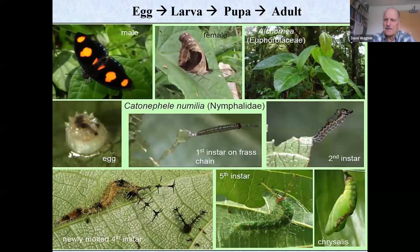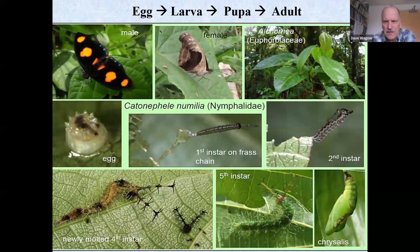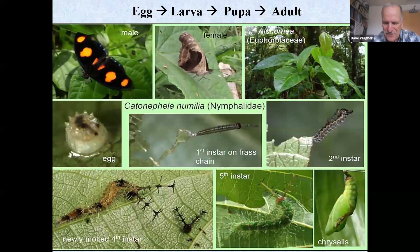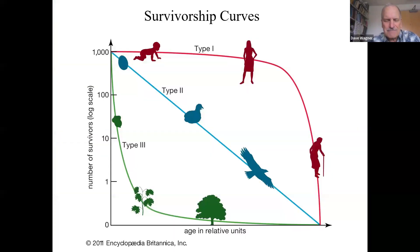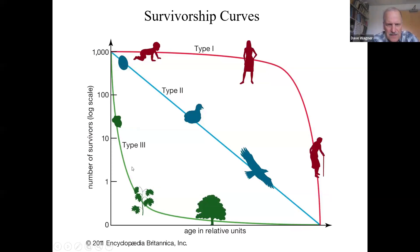Butterflies and moths undergo holometabolous development — four life stages: egg, larva, pupa, and adult. These insects have what's called Type 3 survivorship curves, meaning most mortality happens very early. They produce lots of eggs — maybe 100 to 200, and some moths up to 30,000 — but most brothers and sisters won't make it. There's a tremendous loss of individuals through the life cycle, with a very small fraction reaching adulthood and reproduction.